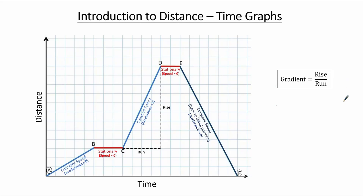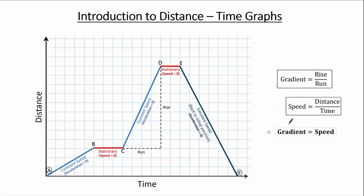We now introduce a very important formula linking speed, distance, and time: speed equals distance divided by time. Linking these two formulas together — the gradient equals rise over run, and for a distance-time graph that equals distance over time, which equals the speed. Therefore, the gradient of a distance-time graph equals the speed. So the gradient of line AB equals the speed from A to B, and the gradient of line BC equals the speed from B to C.